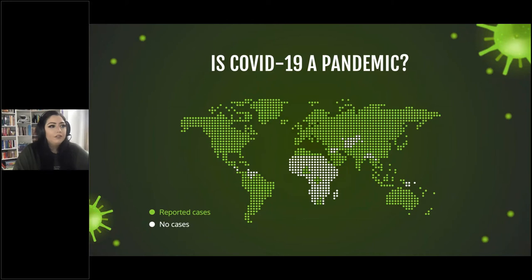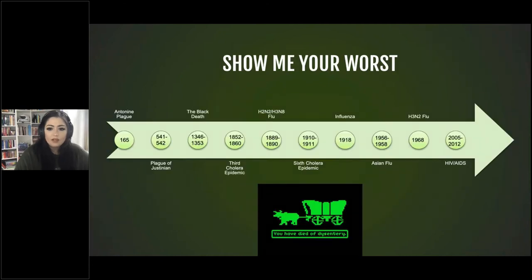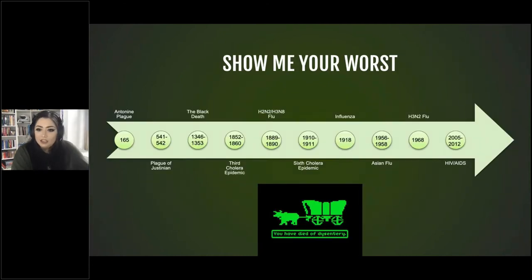COVID-19 was declared to be a pandemic. I'm not sure if this map needs updating — I don't remember specifically what parts of Africa were affected, but most of the world has been impacted at this point. Now let's look at a history of pandemics to see if we can identify any trends.